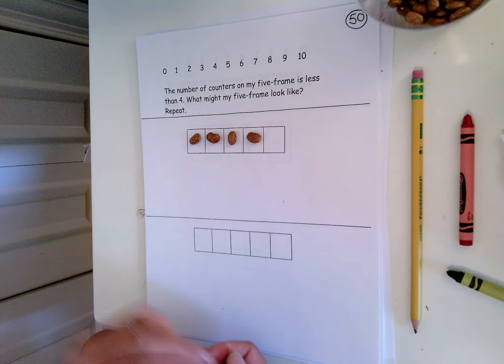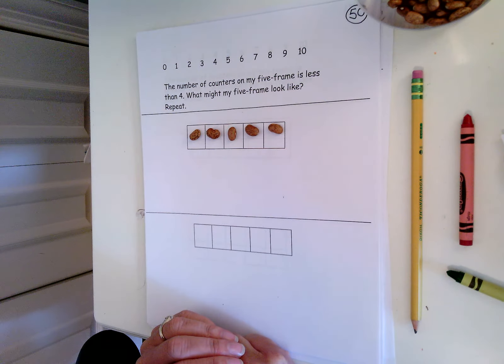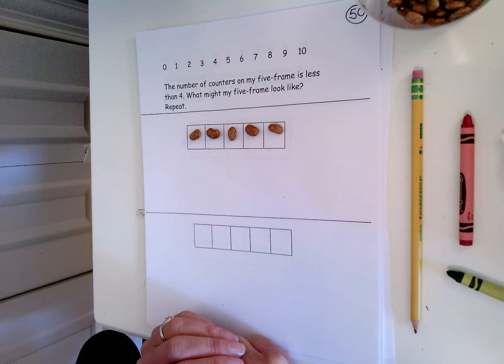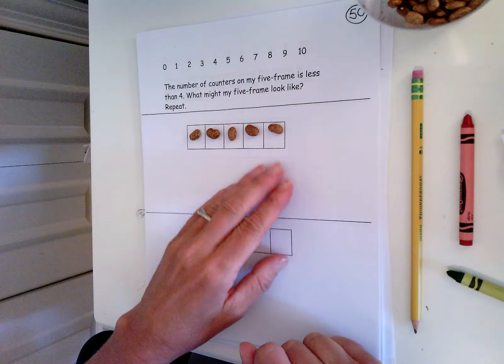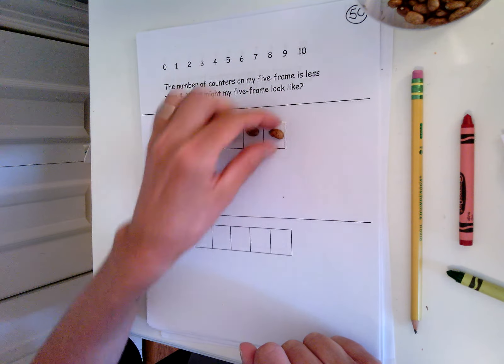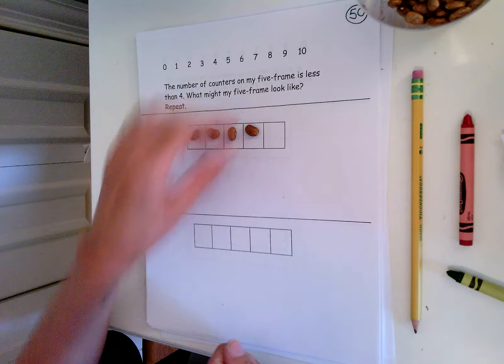Could I put five counters on my five frame? No, that's greater than four. Five is greater than four. So five doesn't work because it's greater than four. Four doesn't work because it's equal to four. I want less than four.